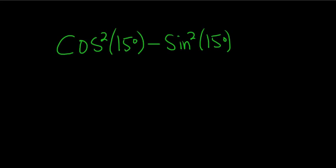Write as a single trig function or number solution. In this problem, the identity we're going to use is cosine 2x equals cosine squared x minus sine squared x.